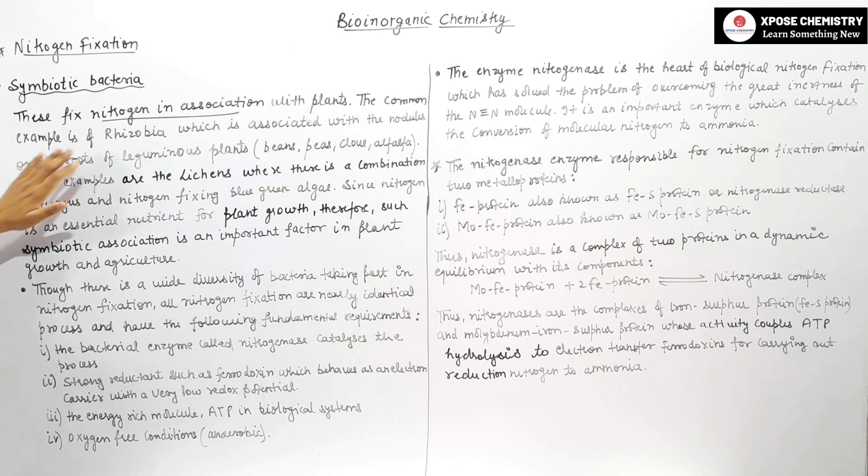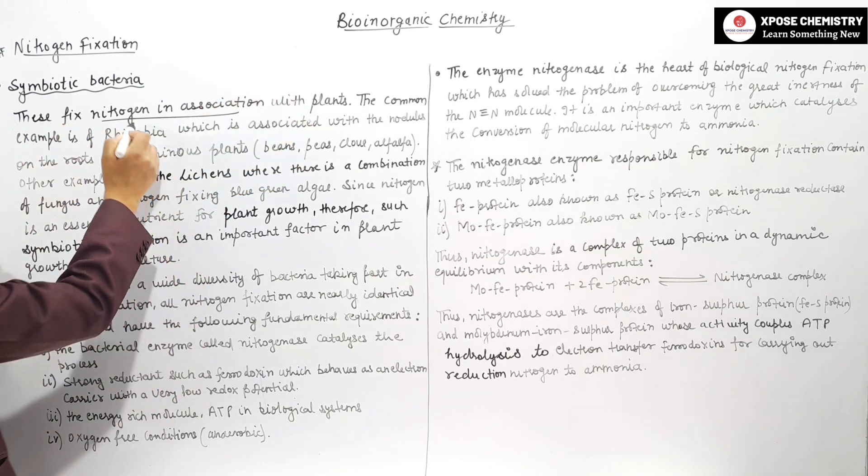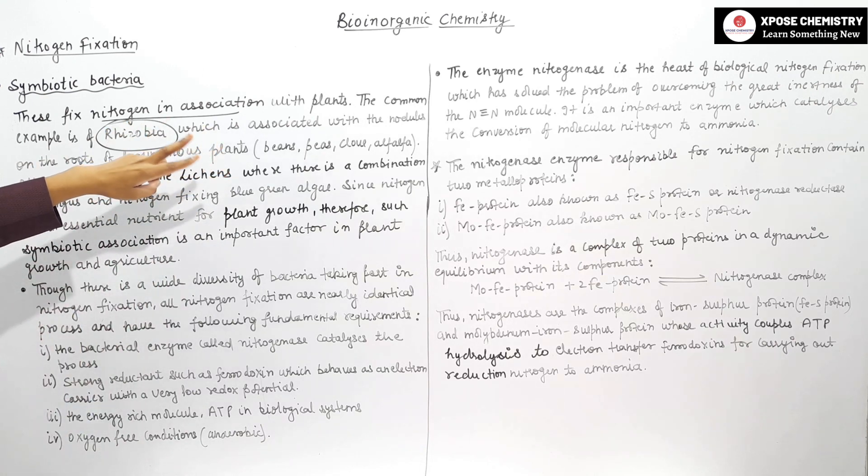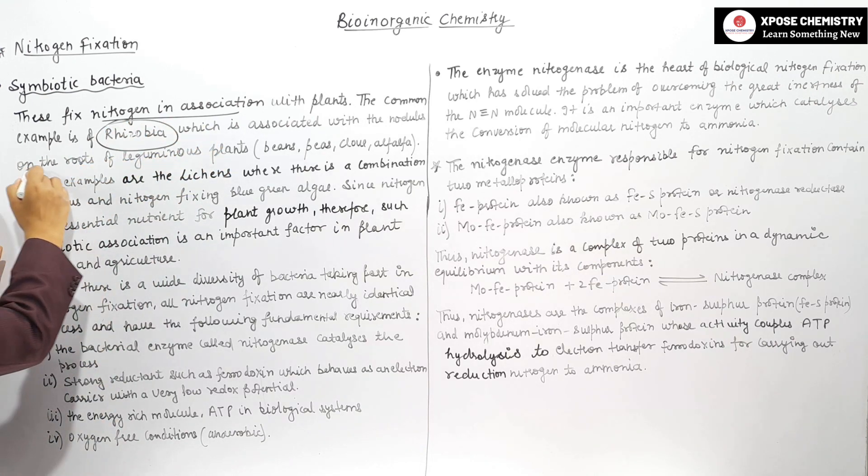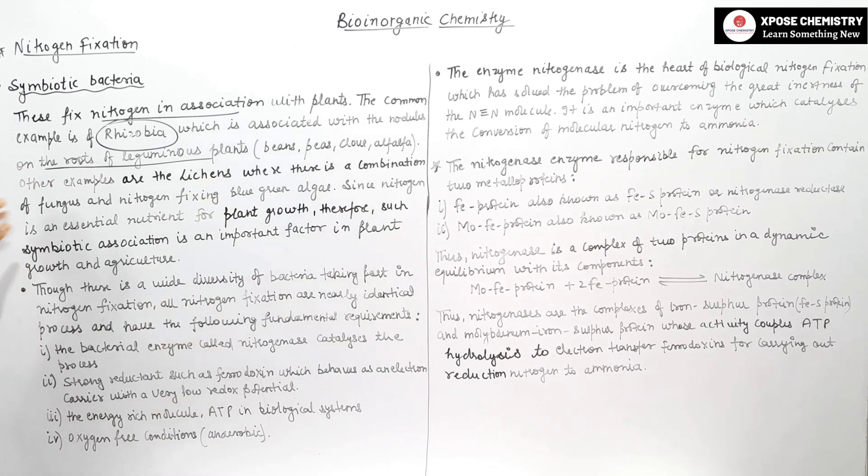The common example is rhizobia, which is associated with nodules in root leguminous plants like beans, peas, clover, and alfalfa.